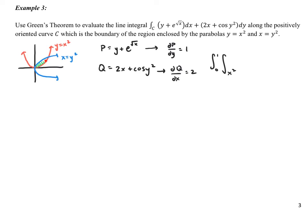and y from x². So again, this is all kind of chapter 12 now. So the lower function is x². The upper function is the square root of x. And then inside here, we're going to do ∂Q/∂x, which is 2, minus ∂P/∂y, which is 1. And we've set it up as dy dx.